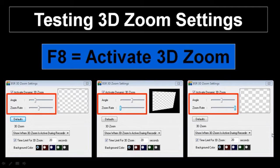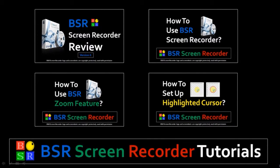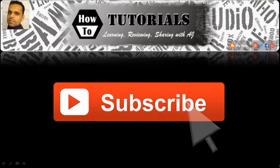As you can see, the 3D zoom settings need to be adjusted based on your preference. But that's pretty much how it works. Hope you found this useful. You can check my other BSR tutorials on my YouTube channel, and if you've got any questions please feel free to leave them in the comments section. Thanks for watching.